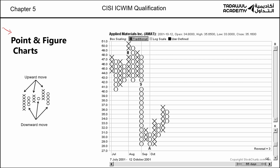CISI talks about the point and figure chart. Every X shows an up movement. Every O shows a down movement. This is not a very popular type of chart — it's not very easy to read. But in the exam, the only thing you need to know is: a point and figure chart shows X's and O's. X is an up movement and O is a down movement in price.